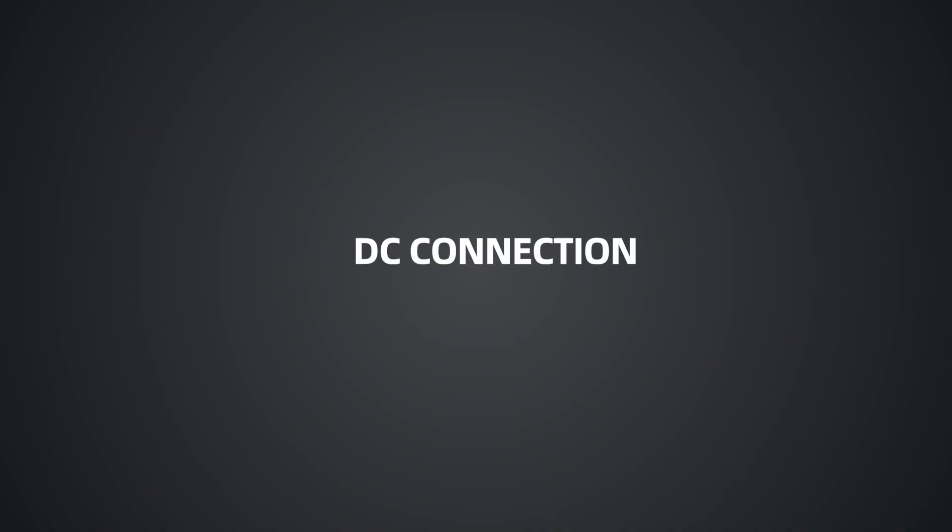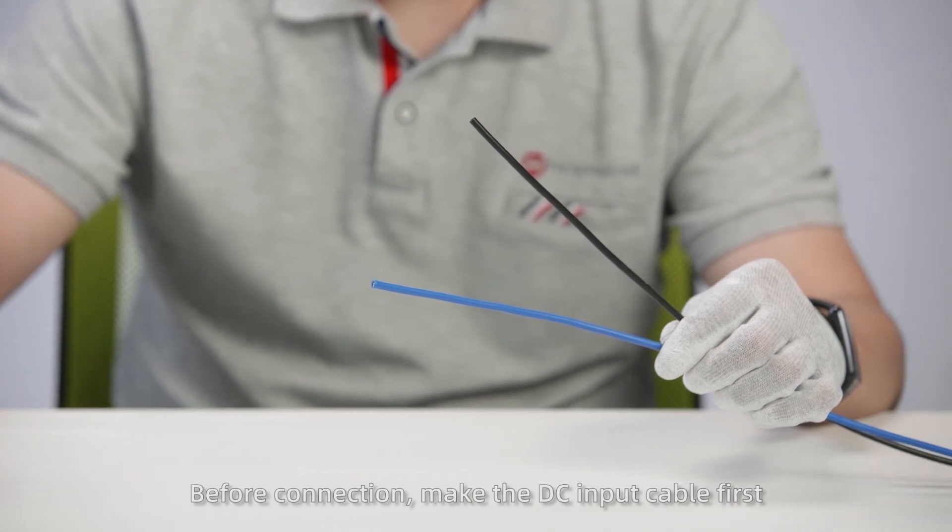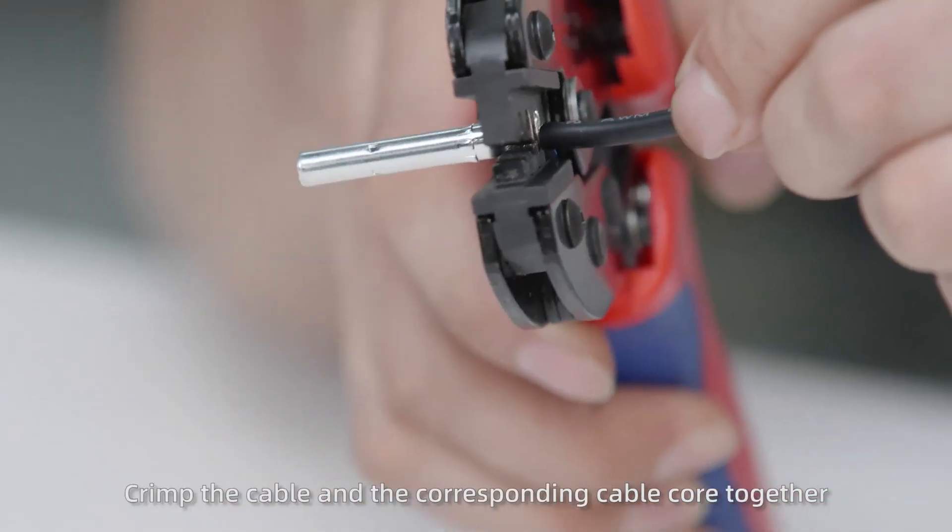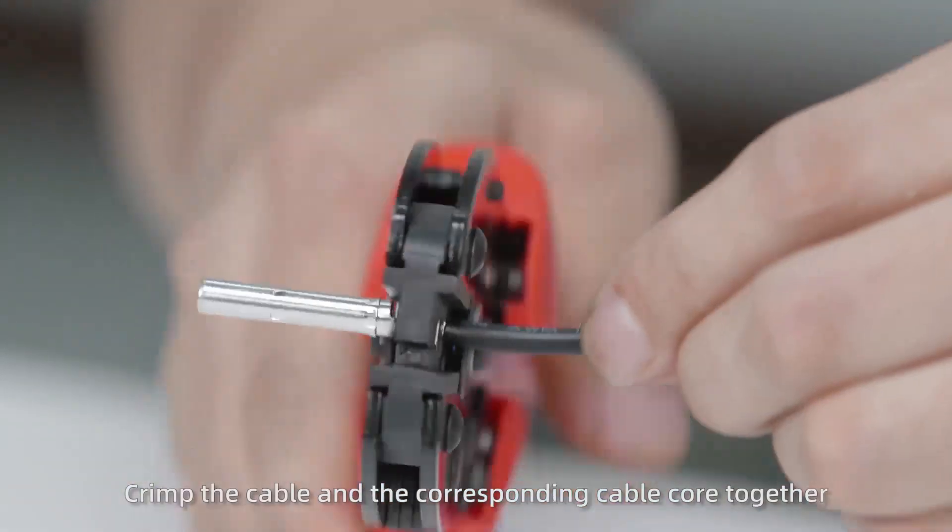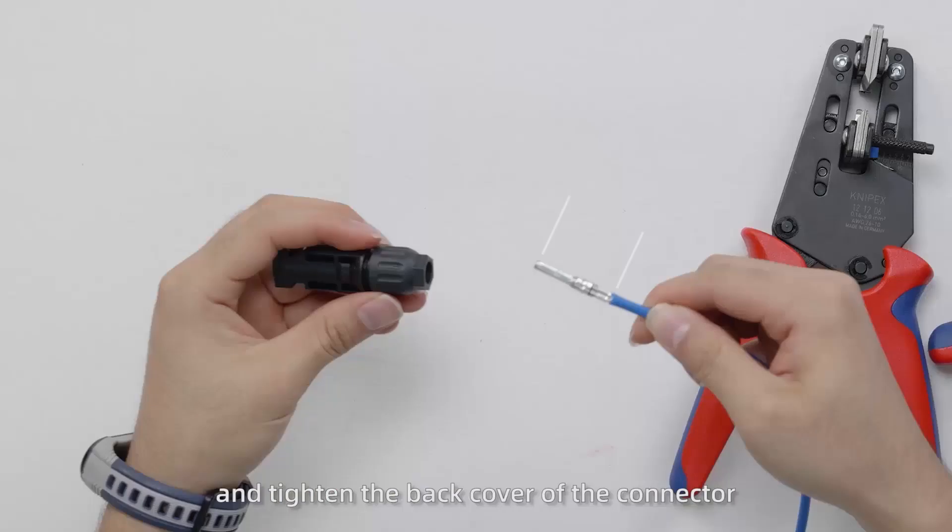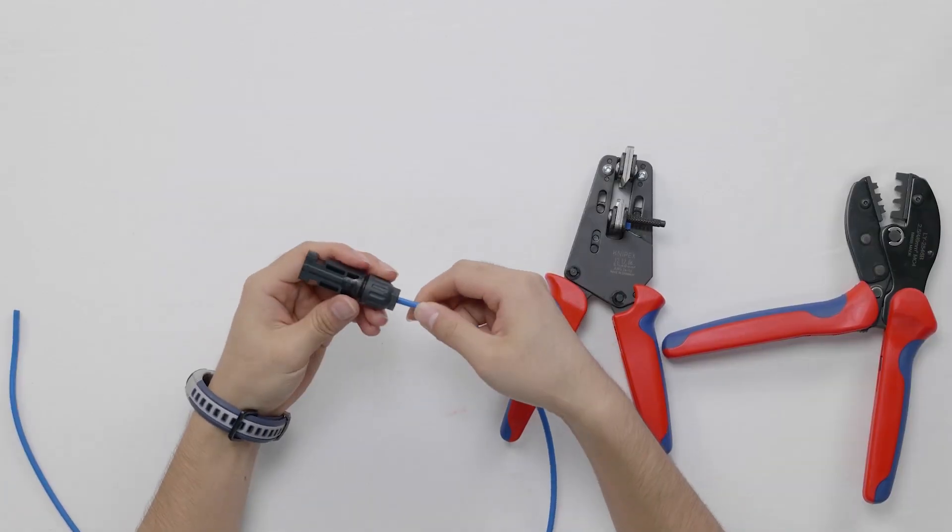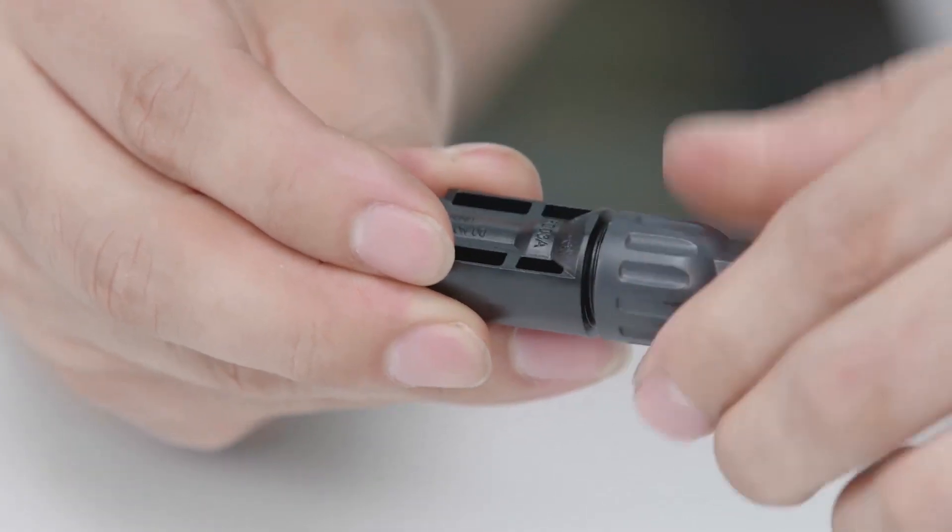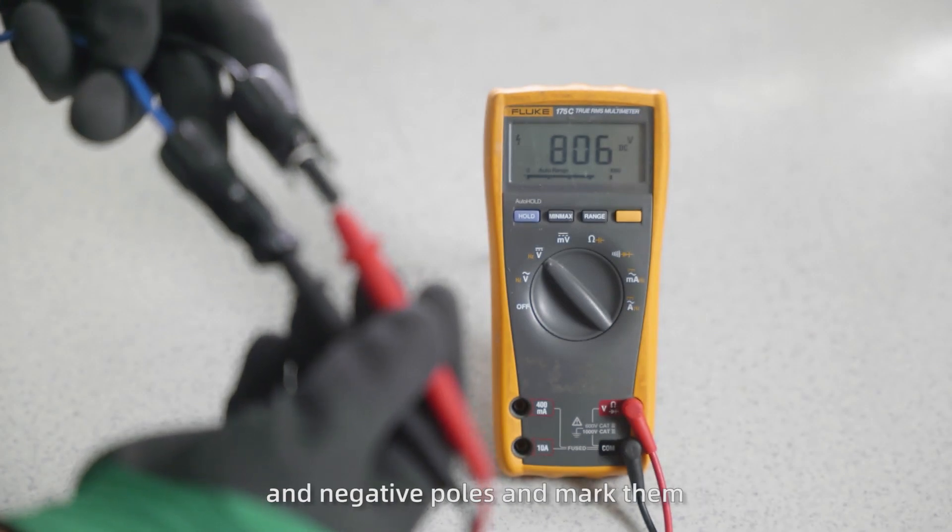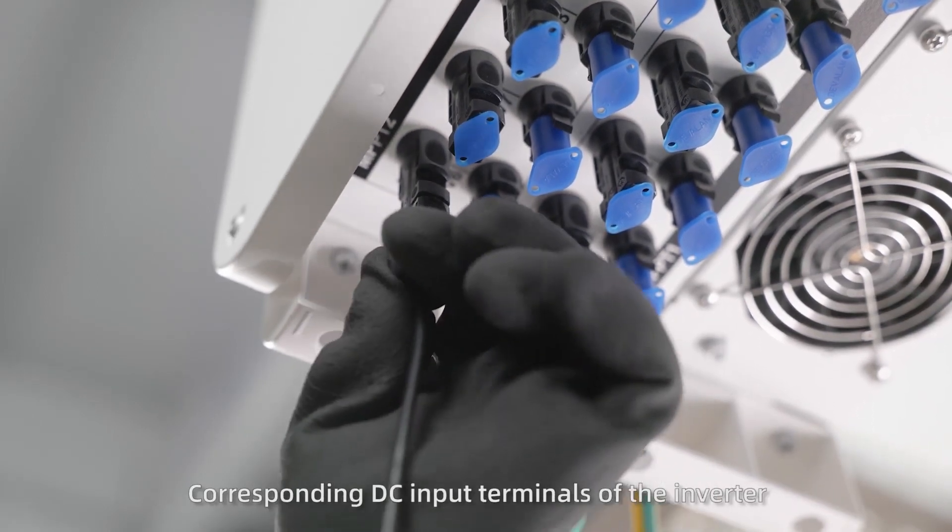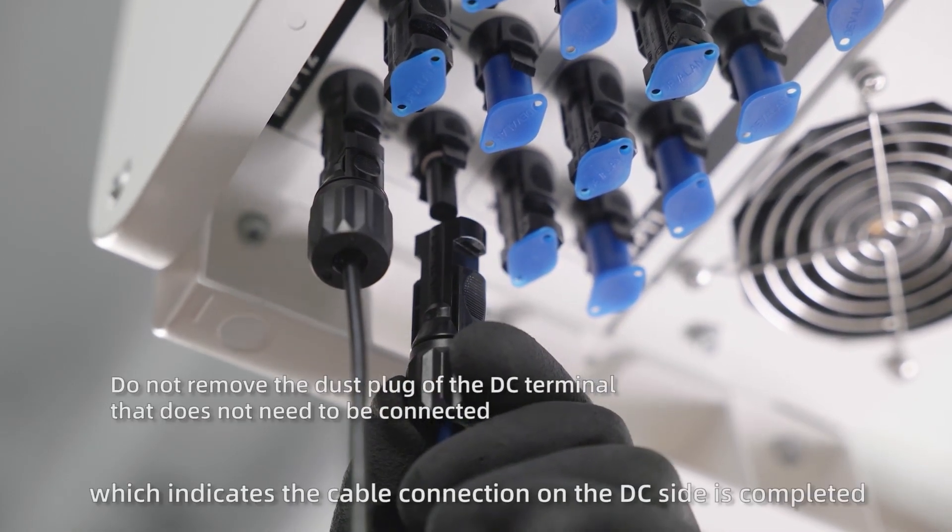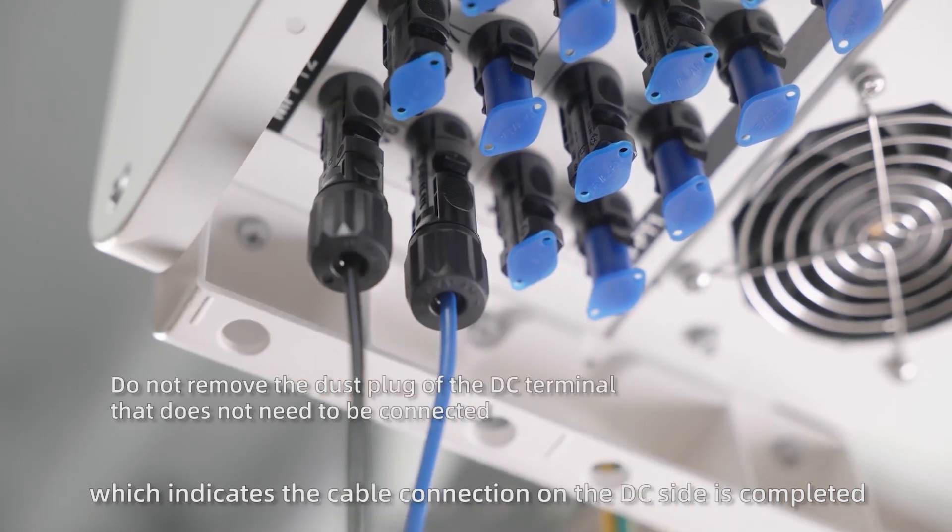Finally, connect cables on the DC side. Before connection, make the DC input cable first. Confirm the positive and negative poles of the input cable. Then use a wire stripper to strip the cable. Crimp the cable and the corresponding cable core together. And finally insert the cable core into the male and female poles of the MC4 connector according to the correct polarity. After the DC input cable is completed, use a multimeter to determine the positive and negative poles and mark them. Then insert the positive and negative connectors into the corresponding DC input terminals of the inverter. When you hear a sound of click, the terminal is connected in place, which indicates the cable connection on the DC side is completed.